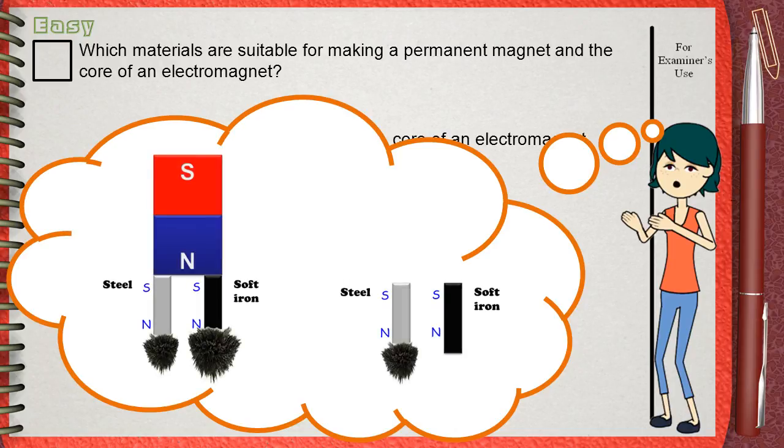Soft iron acquires the magnetic property easily in the presence of a magnet, while steel acquires weaker magnetic property. When the magnet is removed, soft iron loses all its magnetic property.